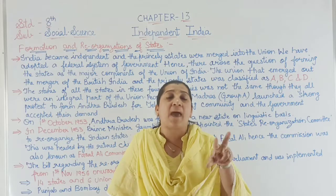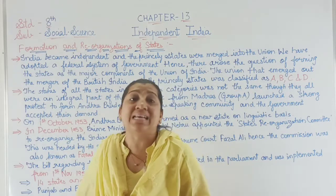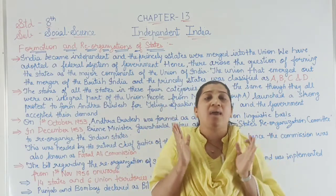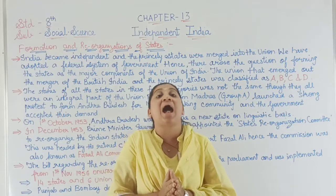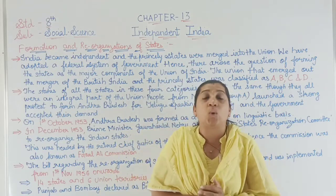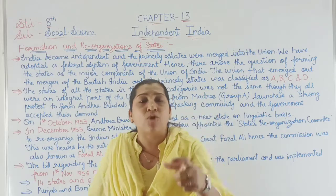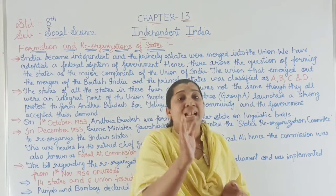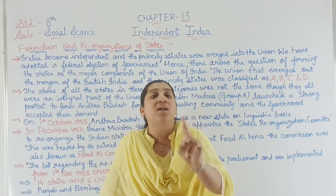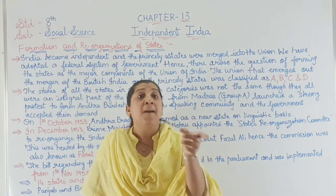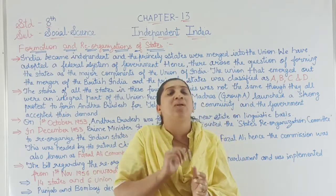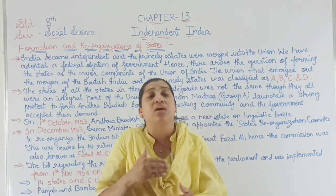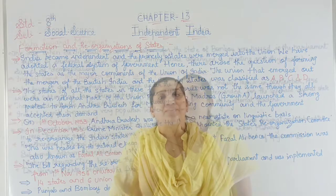Fourteen states and 6 union territories were formed on the basis of languages. Only two states — Punjab and Bombay — were declared as bilingual states. A bilingual state means a state where two language communities live together in a single state. Punjab and Bombay were bilingual states where people of two different languages lived together, and this became the reason for further states to be formed.